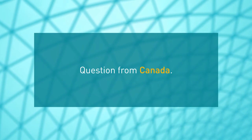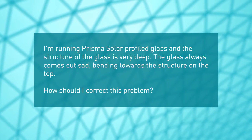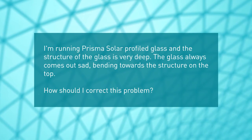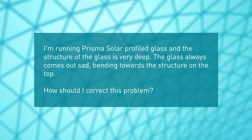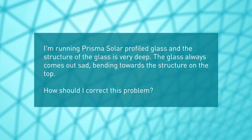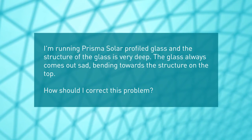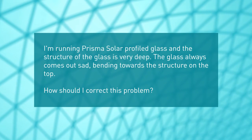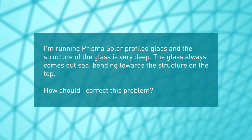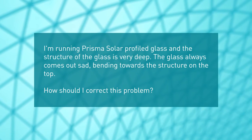Question from Canada: I'm running Prisma Solo profiled glass and the structure of the glass is very deep. The glass always comes out sad, bending towards the structure on the top. How should I correct this problem?